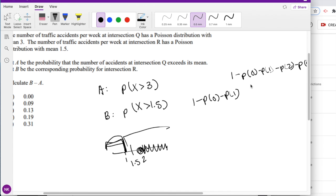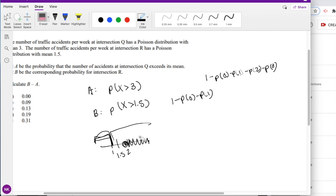So we can do 1 minus the probability that it is 0, minus the probability that it's 1. Let's just dive right in. The hardest thing was just setting it up.